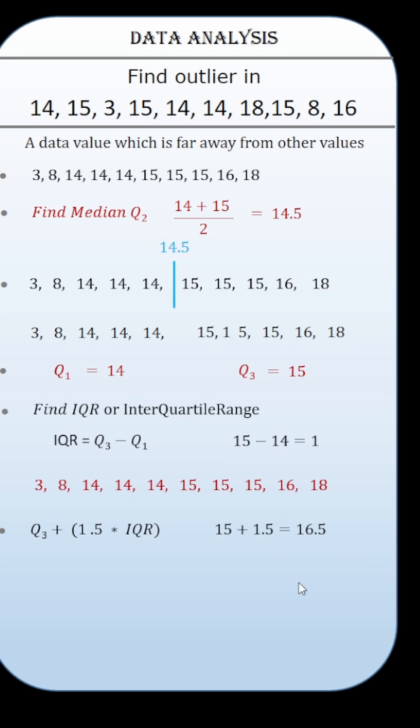Any values exceeding the upper fence are outliers. Calculate the lower fence of data by subtracting 1.5 times IQR from first quartile Q1. Any values less than lower fence are outliers.